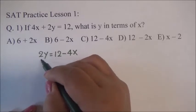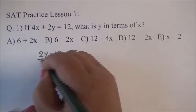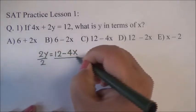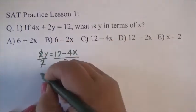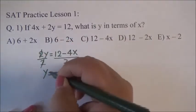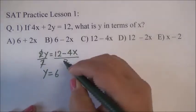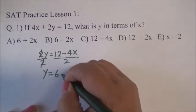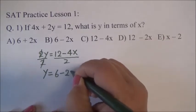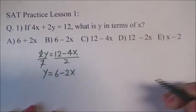So, we want to divide both sides by 2. This is going to be cancelled out. And Y is equal to 12 divided by 2 is 6. Negative 4X divided by 2 is negative 2X.